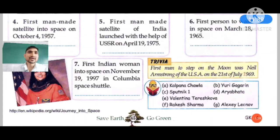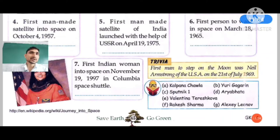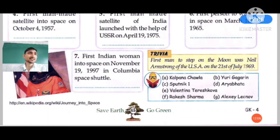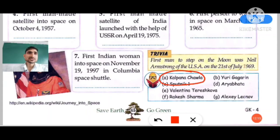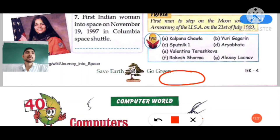The last question: the first Indian woman in space on November 19, 1997, from the Columbia Space Shuttle. The option to choose is option A — Kalpana Chawla. She was very famous from India. I hope you understood this chapter very well.